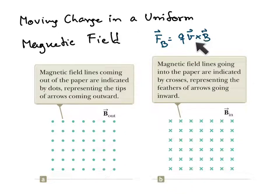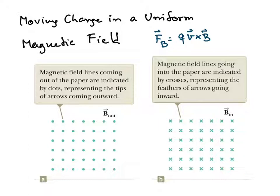V cross B is a vector that points perpendicular to the plane formed by V and B. To write a three-dimensional vector on a two-dimensional screen or paper is quite difficult, so we need a way to express this three-dimensional vector.